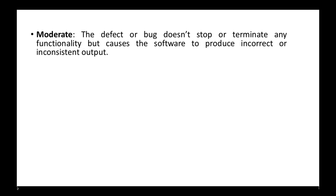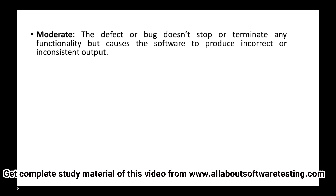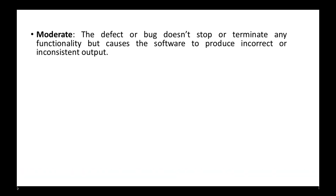The next type is moderate. The defect does not stop or terminate any functionality but causes the software to produce incorrect or inconsistent output. For example, if we click on the inbox button in Gmail and the application redirects us to the profile page instead — the function is working, but not correctly. This defect is categorized as moderate severity.